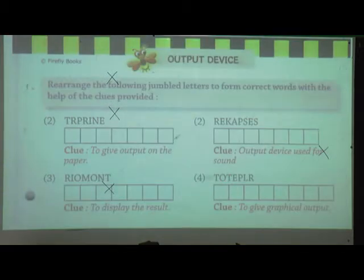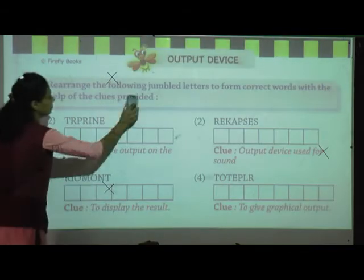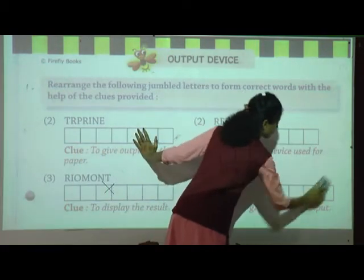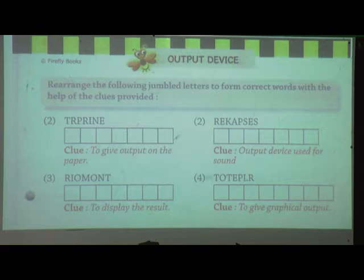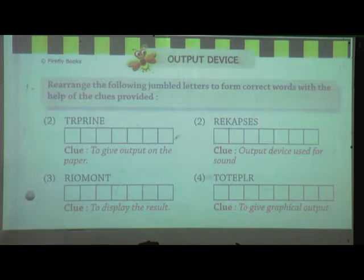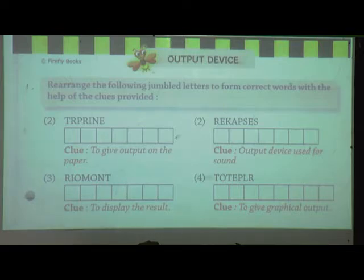Now see page number 13. Rearrange the following jumbled letters to form the correct word with the help of the clue provided. These are the clues, and by using the clue we have to rearrange these words. The first clue is: to give output on the paper. Who gives output on the paper? Yes — printer.